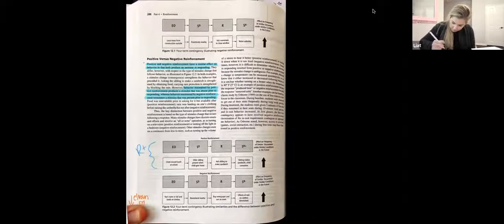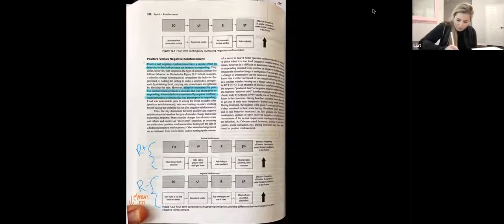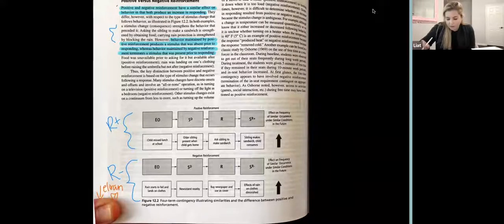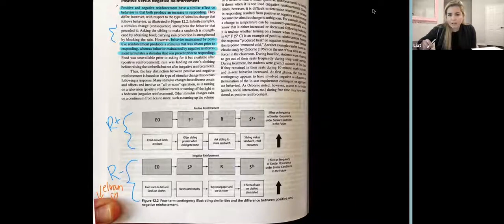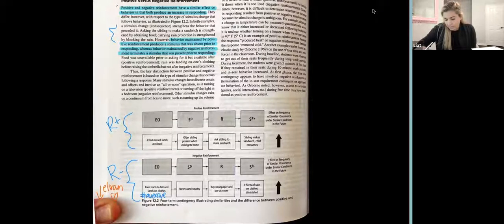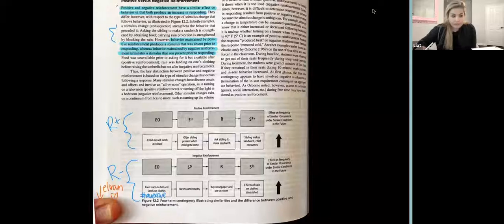I'm sure before this, you read a chapter on reinforcement. Then I go through, they differ with respect to the type of stimulus change that follows behavior. Then I would look at the image that it was showing me. Here they have this one is positive reinforcement, this one is negative reinforcement. And then they put all this writing over here into an image. So they show the first one of positive reinforcement, child missed lunch at school. Now they see the older sibling at home. When they get home, they asked the sibling to make a sandwich. And the sibling makes a sandwich.